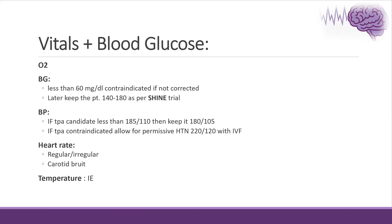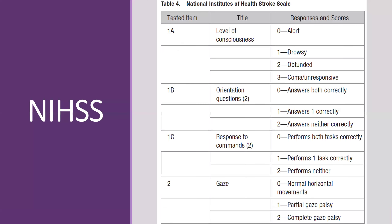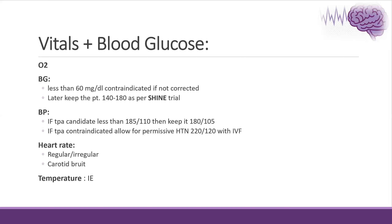In the assessment, we should make sure of oxygenation, blood glucose as mentioned, and blood pressure for the patient candidate for TPA should be less than 185 over 110. Heart rate should be assessed to determine if it is regular or irregular, and if the patient has any fever, to rule out infective endocarditis.